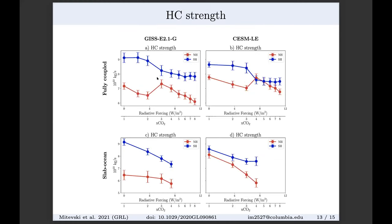For Hadley cell strength in GISS: from PI to 2x CO2 the Northern Hemisphere Hadley cell weakens. But between 2x and 3x CO2, the Hadley cell strengthens — at 3x CO2 we have a stronger Hadley cell than at PI. Then Hadley cell strength declines at higher CO2 values. The Southern Hemisphere Hadley cell strength monotonically decreases. CESM shows the same behavior except between 3x and 4x CO2. Slab ocean runs show only monotonic decrease, suggesting ocean dynamics contribute to this kink.